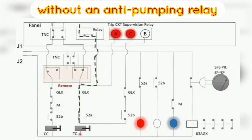Next we learn about how the anti-pumping relay prevents repetitive closing commands. The control circuit diagram of the circuit breaker without an anti-pumping relay is shown in the figure. If the TNC switch remains in a closed position due to any issue, or the operator keeps it in a closed position during fault conditions, both close and trip commands will remain in the circuit, causing repeated closing and tripping of the breaker. This type of operation will cause damage to the circuit breaker and power system because of the high magnitude of the fault current.